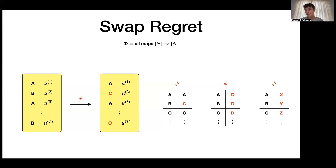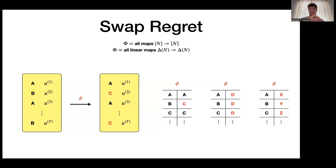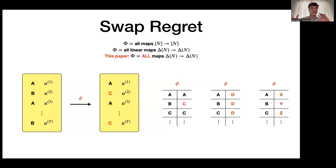Since each round we select a distribution over actions, in the classical swap regret setting this corresponds to considering all linear transformations — row-stochastic matrices from the simplex over actions to itself. In this paper we achieve something even more powerful: we compete against all possible transformations from the simplex to itself — not even continuous, no properties assumed — a full mapping of the simplex to the simplex.